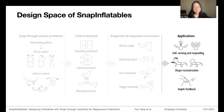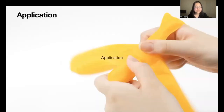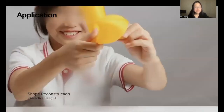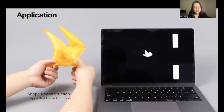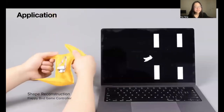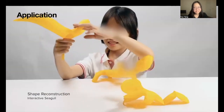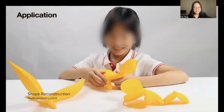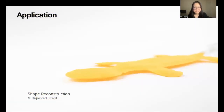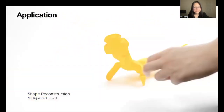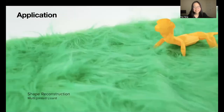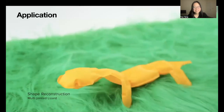Based on our methods, we can apply snap-through instability of inflatables to many scenarios. For example, by leveraging shape reconfiguration, we can create game controllers and a series of interactive toys with multiple joints, such as the snake and the elephant.